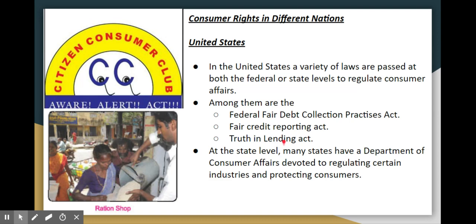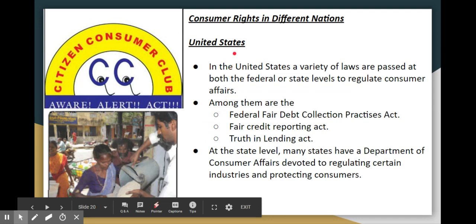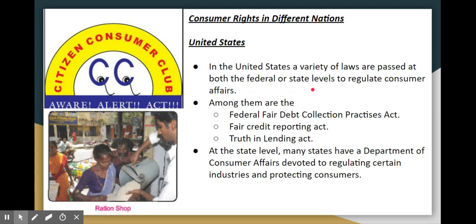Regarding consumer rights in different nations: In the US, consumer affairs are regulated at both the federal and state levels. At the federal level, laws include the Federal Fair Debt Collection Practices Act, Fair Credit Reporting Act, and Truth in Lending Act. At the state level, there is a Department of Consumer Affairs that protects consumers and regulates certain industries.